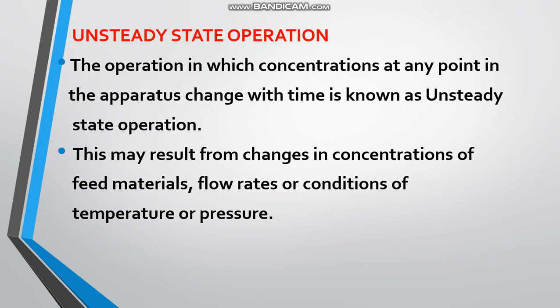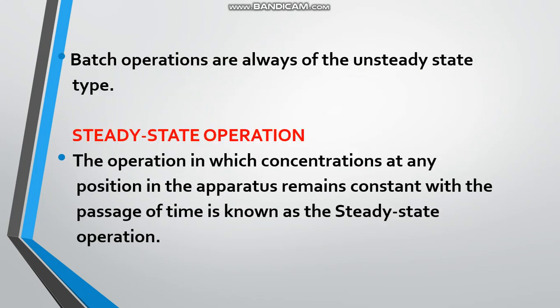Unsteady state operation may result from changes in concentrations of feed materials, flow rates, or conditions of temperature or pressure. Based on these conditions, the concentrations will change. Batch operations are always of unsteady state type — batch reactors and similar systems are almost always unsteady state.